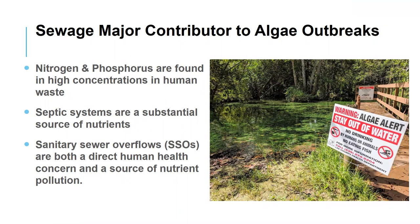Let's talk about why we're here today: sewage. Sewage is a major contributor to algae outbreaks. Human waste has a high level of nitrogen and phosphorus, and as you heard Shannon just mentioned, those are sources of blue-green algae. We're seeing septic systems have a substantial source of nutrients. Most septic tank systems are designed to reduce bacteria — they're not designed to take out nitrogen and phosphorus. They do a little bit better job with phosphorus, but we see high levels of nitrogen running off the septic tank systems.